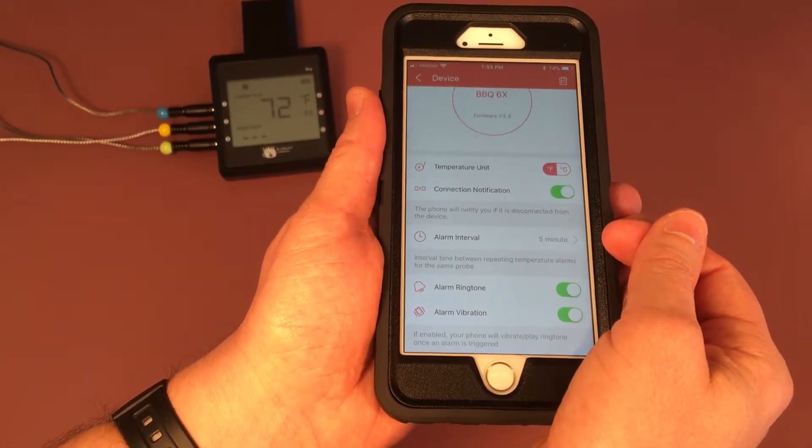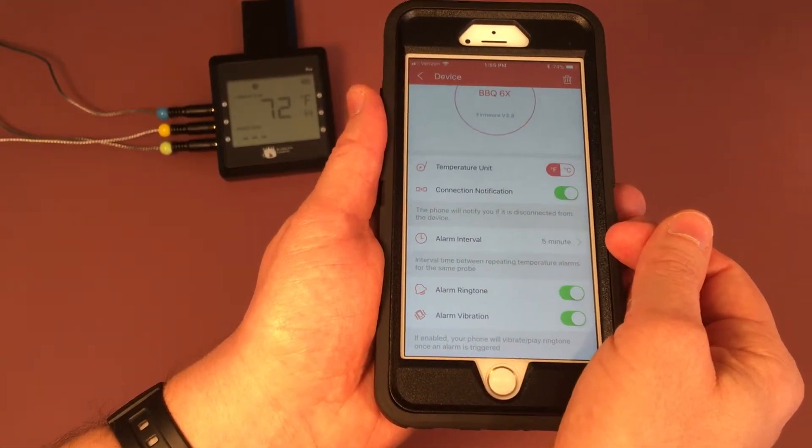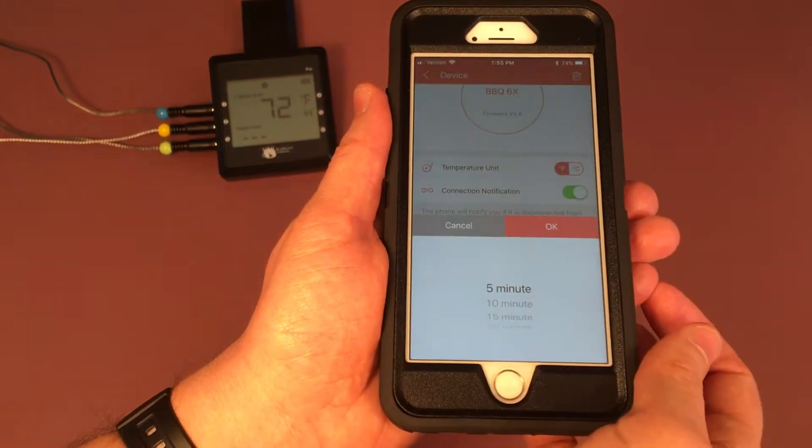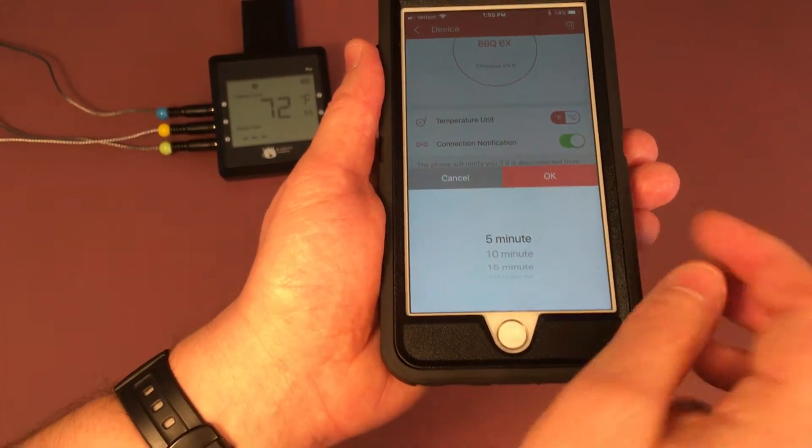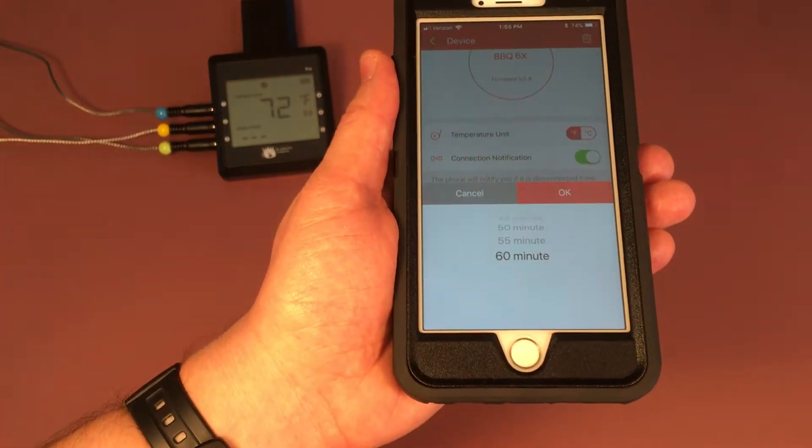Now this is the alarm interval. Right now you see it's set for five minutes, so the alarm would repeat every five minutes after your meat is done, or you can change that to up to 60 minutes.